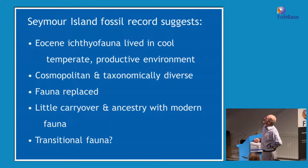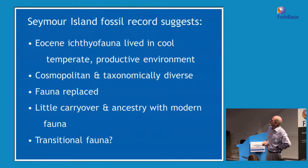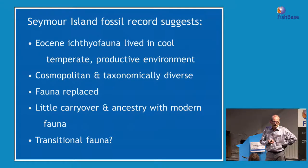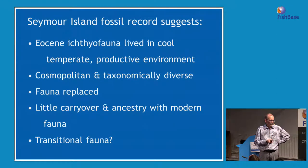The point about the fossil fauna is that it was temperate, lived in a productive environment, and the higher-level taxa were cosmopolitan — found everywhere — although the species were probably unique to the area. Over time this fauna was replaced with almost no carryover into the modern fauna. Skates could be considered an example of a group that carried over, but whether they continuously inhabited the area or re-invaded, we don't know. We have no idea what a transitional fauna looked like — it was probably a mixture of persistent Eocene elements and emerging new elements, including notothenioids.